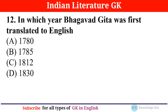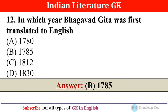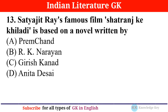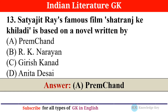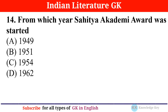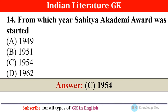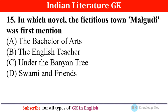Question number eleven: Which one is the first novel of Chetan Bhagat? — answer C: '5 Point Someone.' Question number twelve: In which year was the Bhagavad Gita first translated to English? — answer B: in 1785. Question number thirteen: Satyajit Ray's famous film 'Shatranj Ke Khiladi' is based on a novel written by — answer A: Premchand.